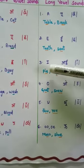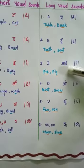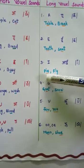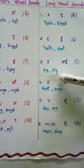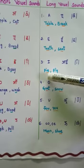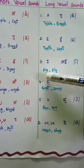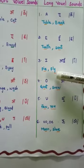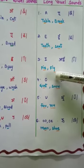Very good. Next comes I. I makes the long vowel sound /aɪ/. Examples: pie and fly. Here, in pie, I-E makes the sound /aɪ/. And in fly, Y makes the sound /aɪ/. Y makes the sound /aɪ/ — fly.